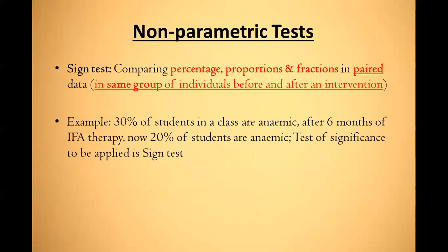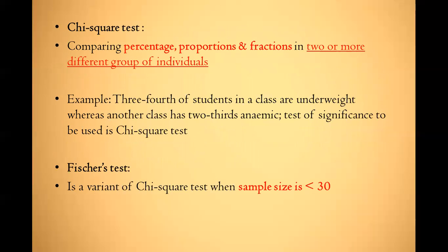Moving to non-parametric tests — these are qualitative tests that measure percentage, proportion, or fraction. First is McNemar's test, which compares the percentage, proportion, and fraction in paired data — that is, in the same group of individuals before and after intervention. For example, if 30% of students in a class are anemic, and after six months of therapy 20% are anemic, the test of significance to be applied is McNemar's test.